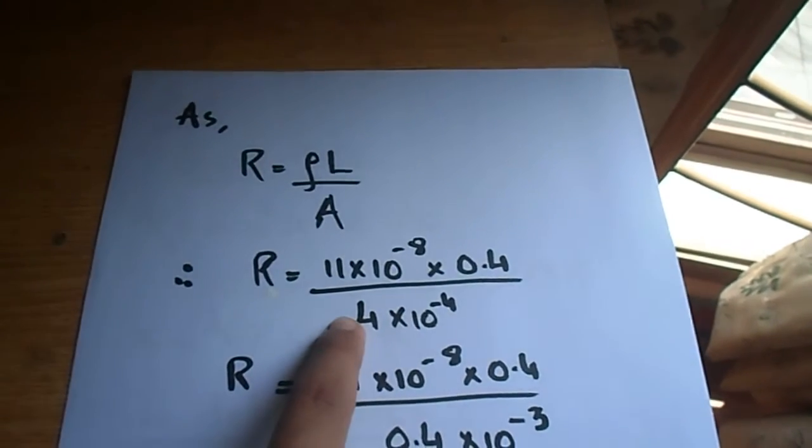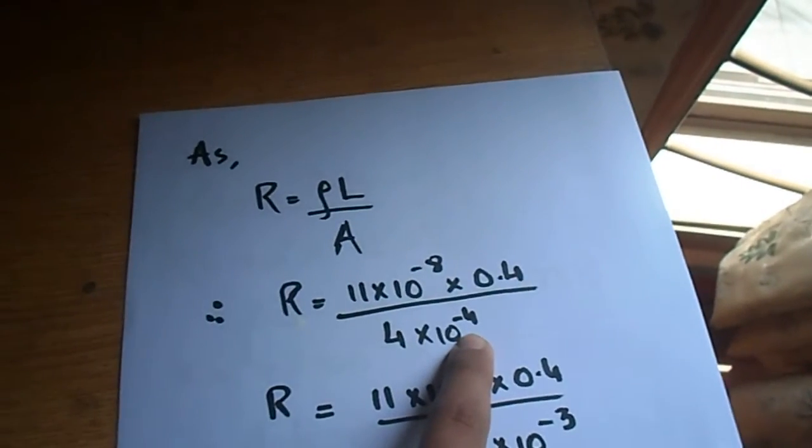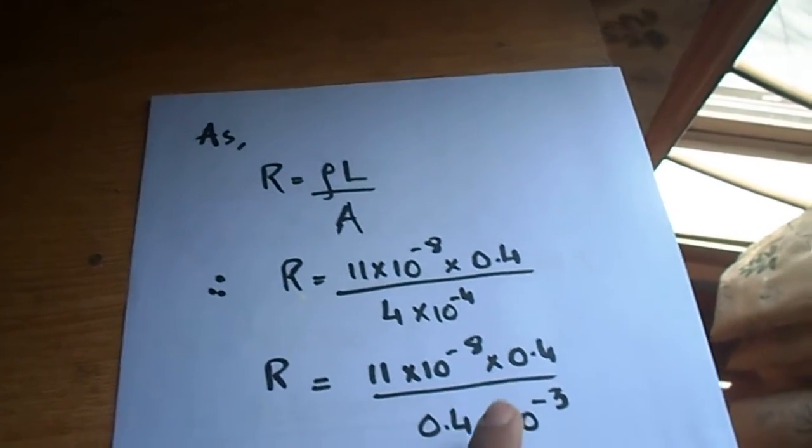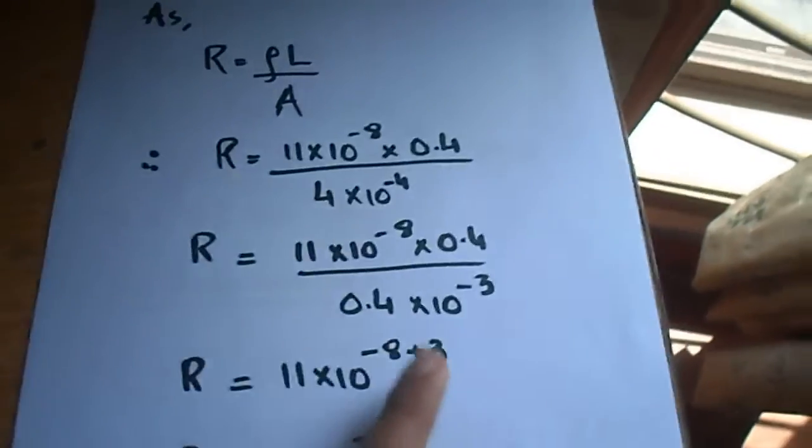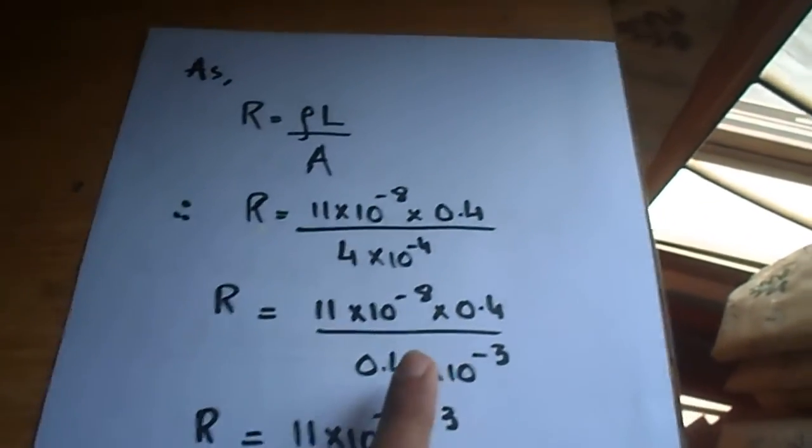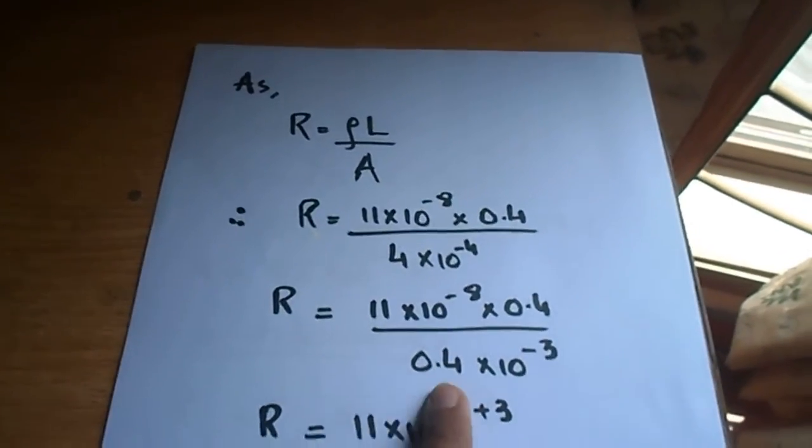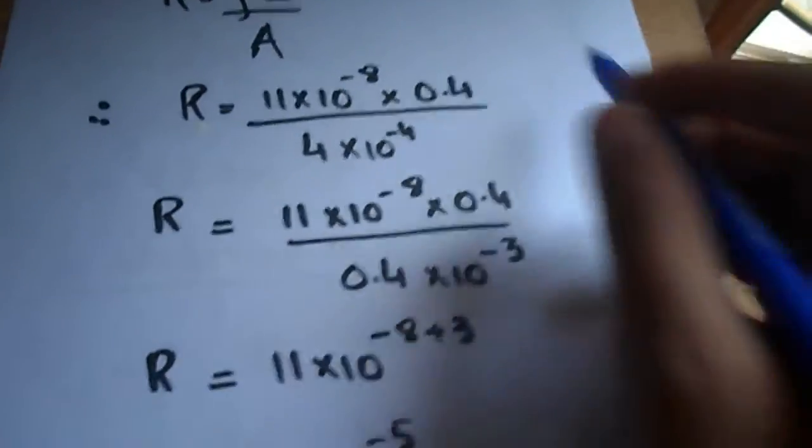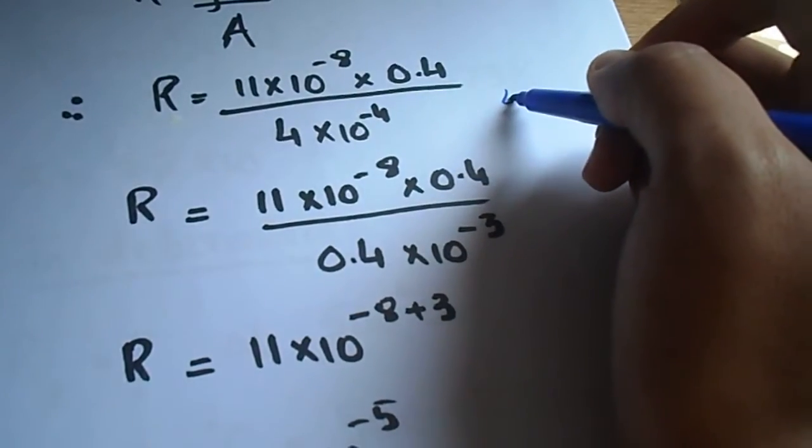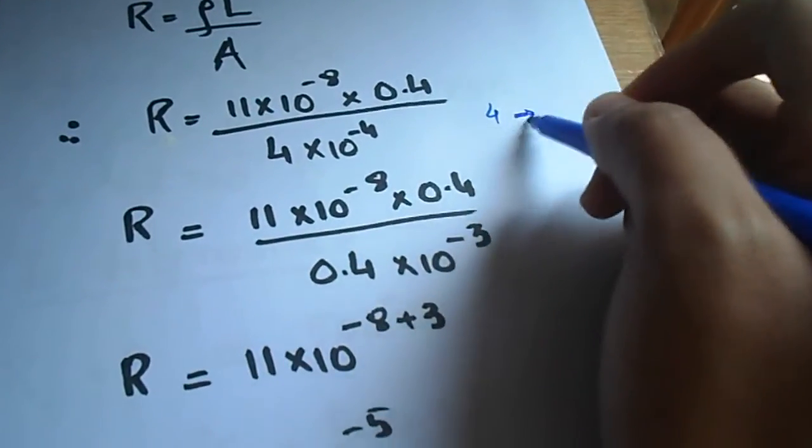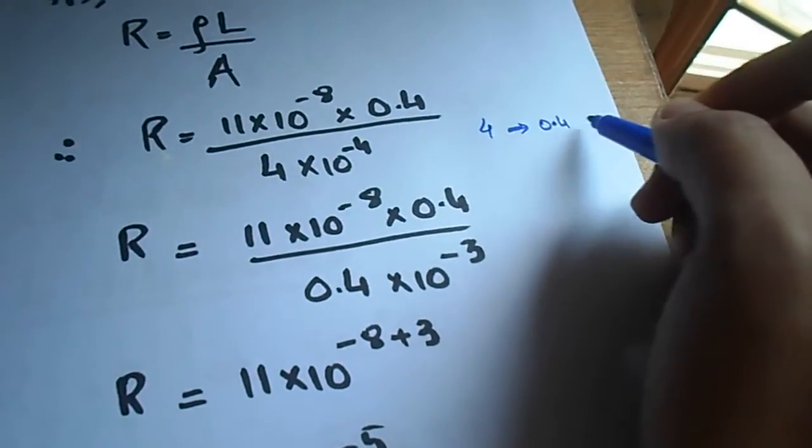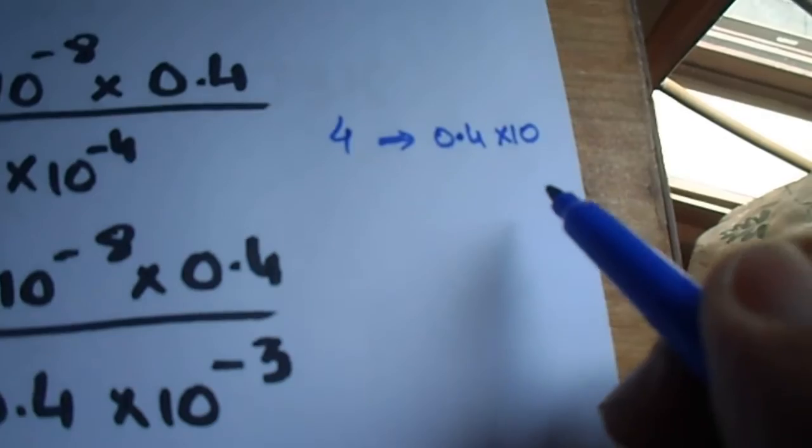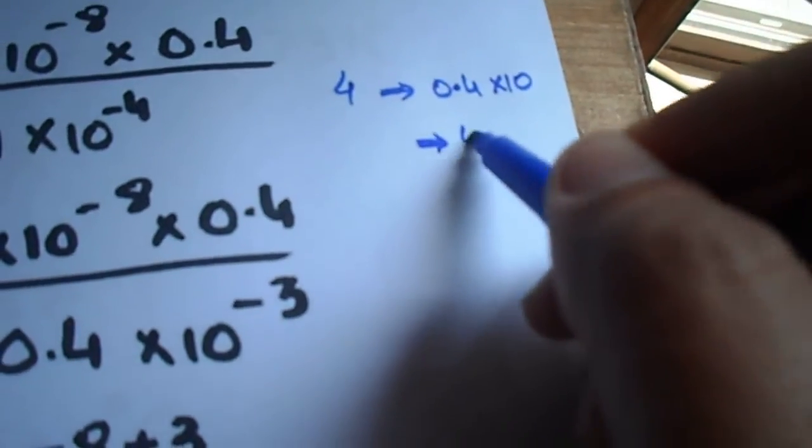Right to left shift, so here we will add powers. We will add 10 to power 1. Minus 4 plus 1 gives 10 to power minus 3. If we want to elaborate this, then basically we convert 0.4 by multiplying by 10. If we multiply 0.4 by 10, then ultimately 4 will come.